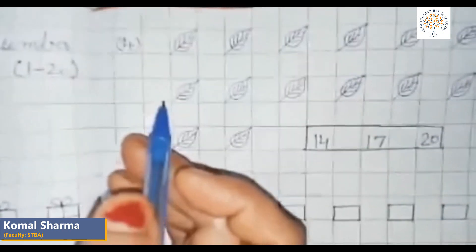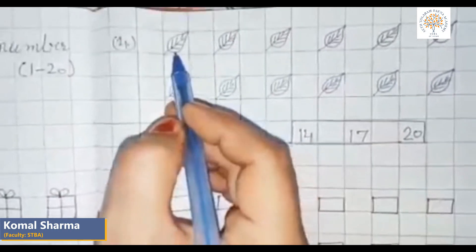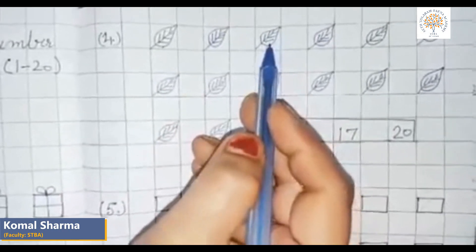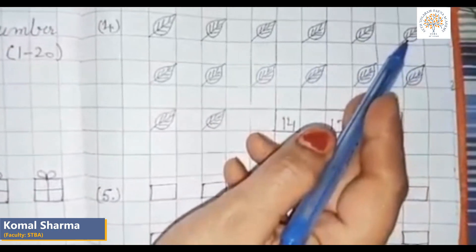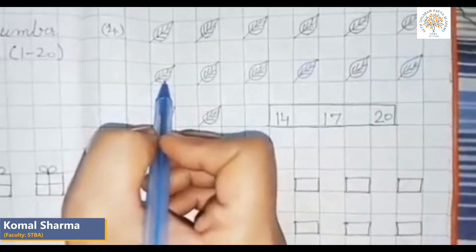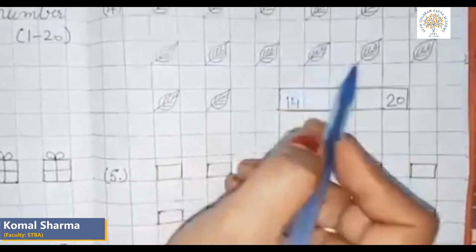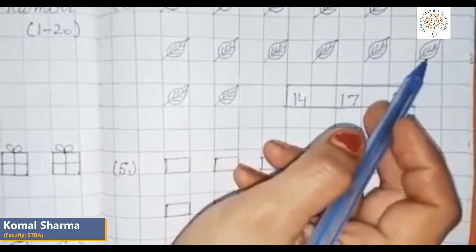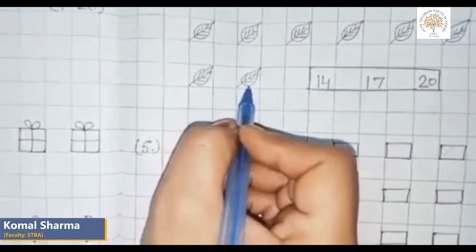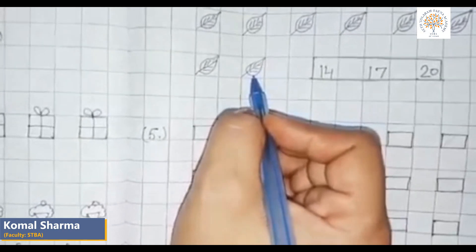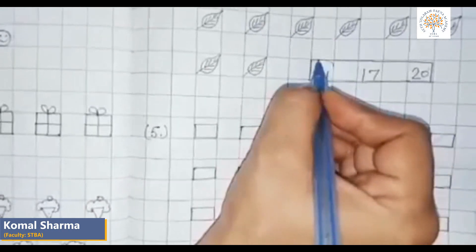Now let us count leaves. How many leaves are there? These are leaves: one, two, three, four, five, six, seven, eight, nine, ten, eleven, twelve, thirteen, and fourteen. There are fourteen leaves. How many leaves are there? Fourteen. So the correct answer is fourteen. We will circle the number fourteen.